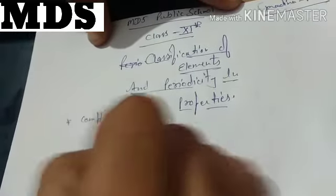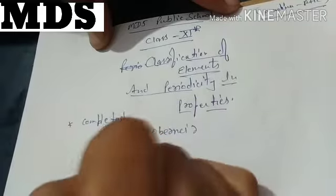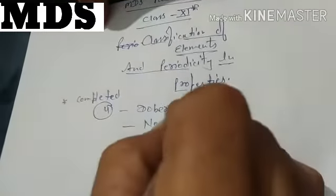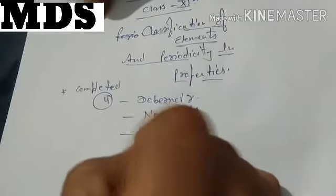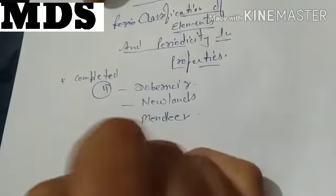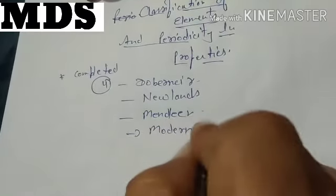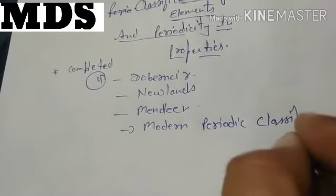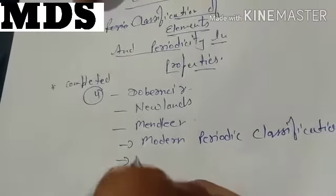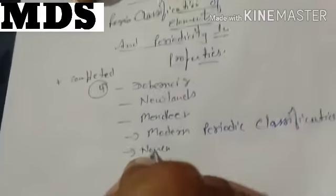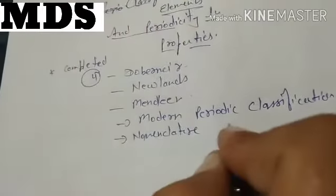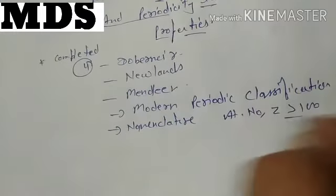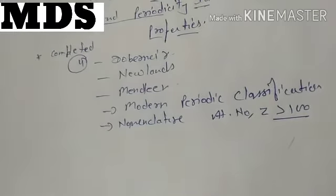The four classifications we did: first one was Dobereiner's triads, second we did about Newlands, then we did Mendeleev, and at last the modern periodic table. All four classifications we have completed, and then the next topic also — nomenclature of elements with atomic number Z greater than 100, and how to do the naming of those elements particularly.